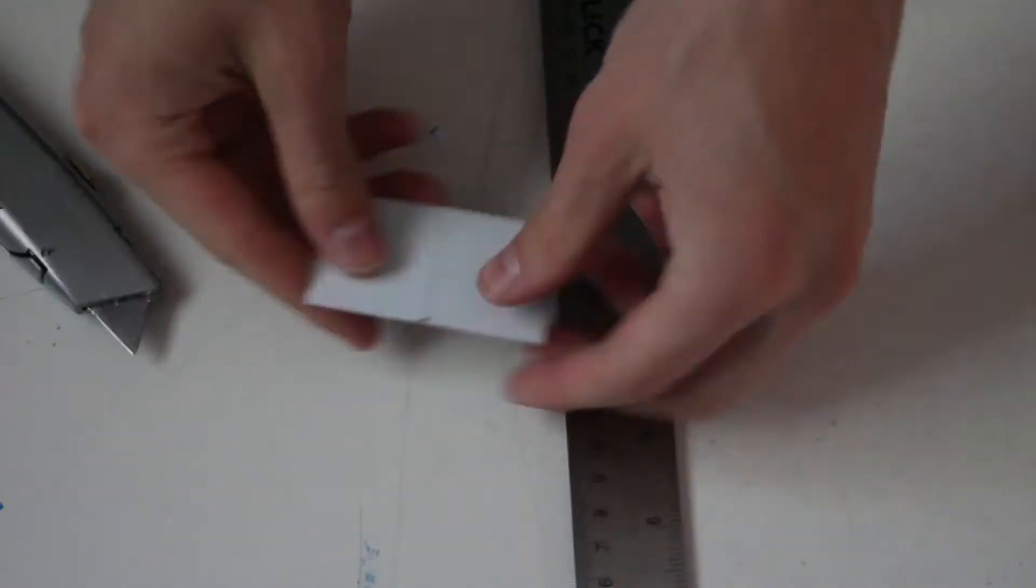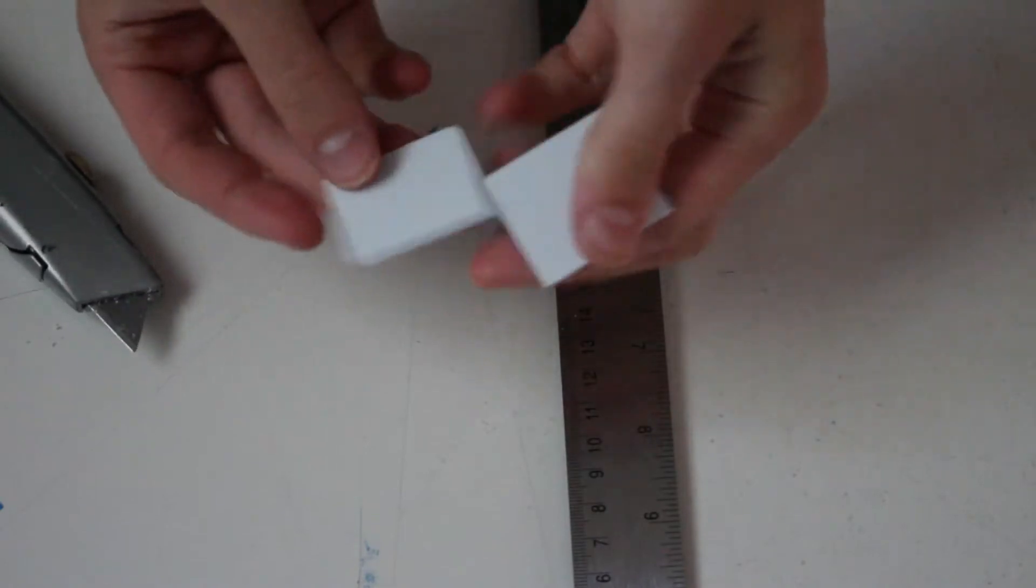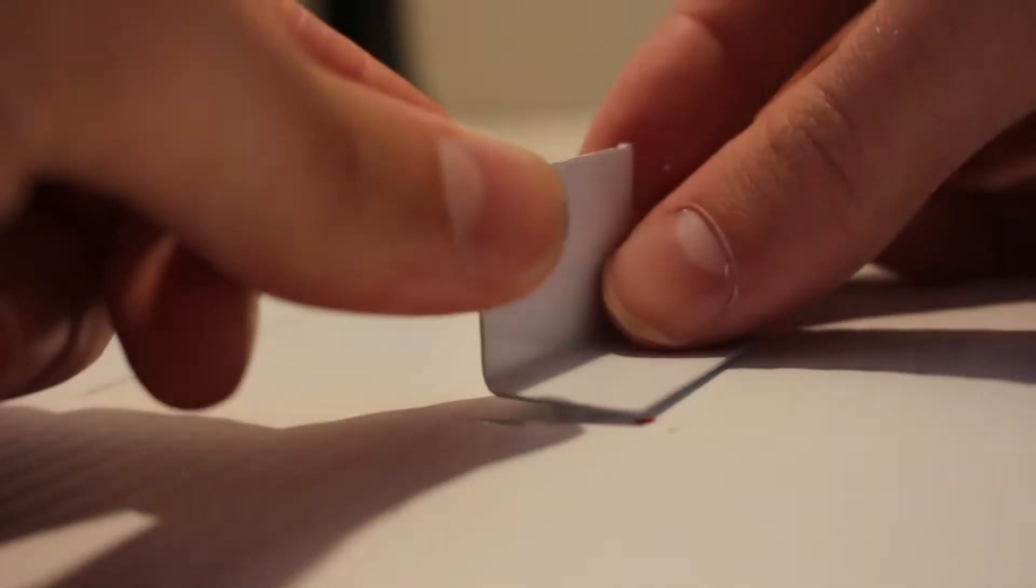Then, I took a piece of gift card and cut it in half. I bent it into an L shape and drilled a hole into it. I hot glued this assembly onto the control surfaces of the flying poster.